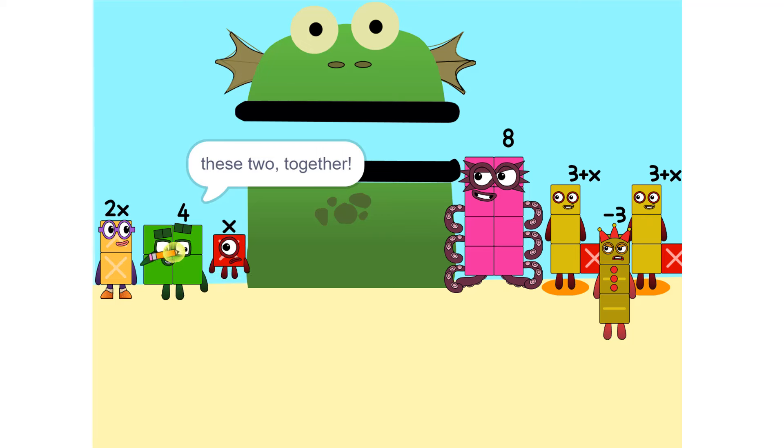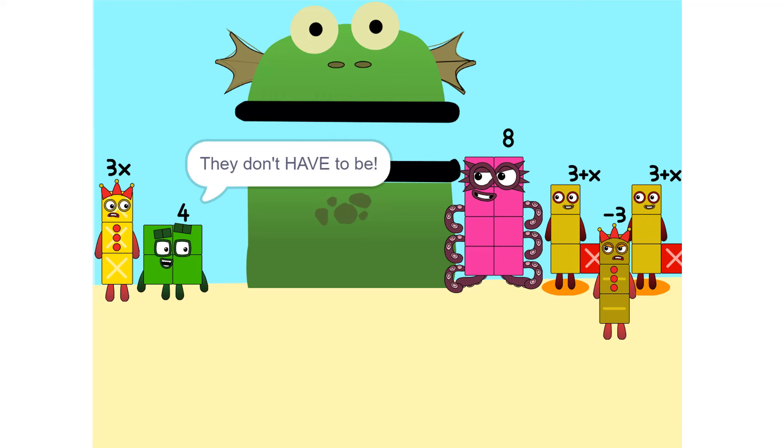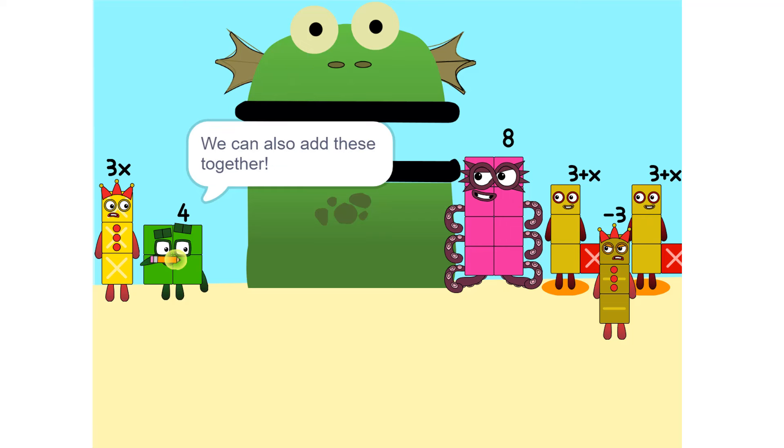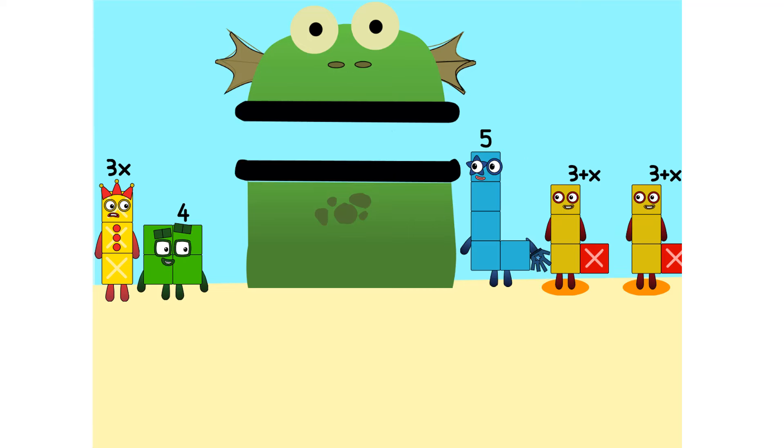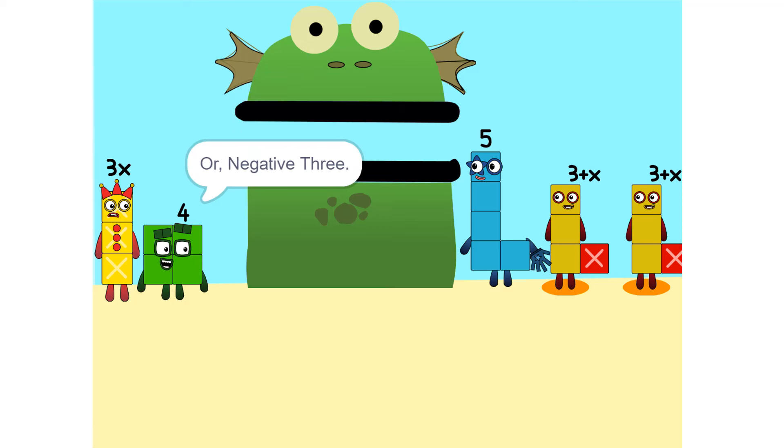One thing we can do is add these two together. How did you do that? We weren't even touching. They don't have to be. Could we do it if we were touching? Yeah. We can also add these together. Five. Wouldn't it be 11 since 8 plus 3 is 11? No. Because we're adding together 8 and minus 3, or negative 3. So it's five. Oh.